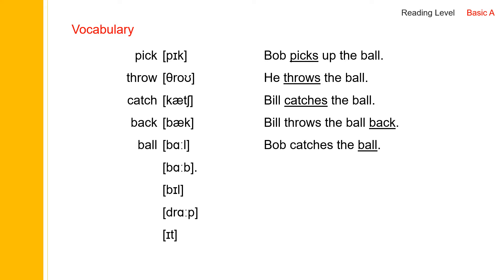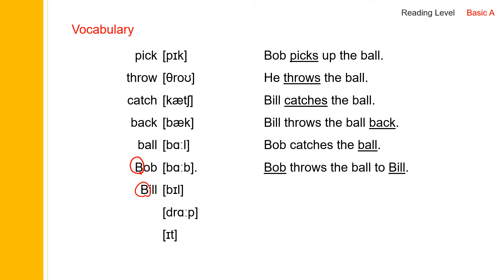And next one: Bob. Bob is a person's name, B-O-B, and you need to use a capital letter. And next one: Bill. Bill is a person's name as well, B-I-L-L, and use a capital letter. Bob throws the ball to Bill.